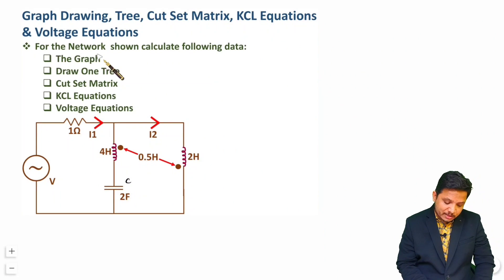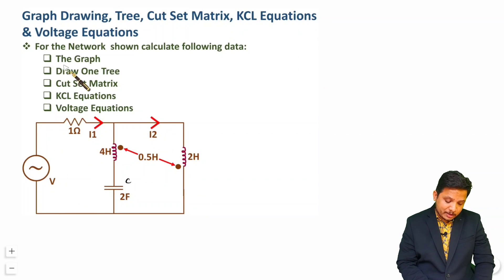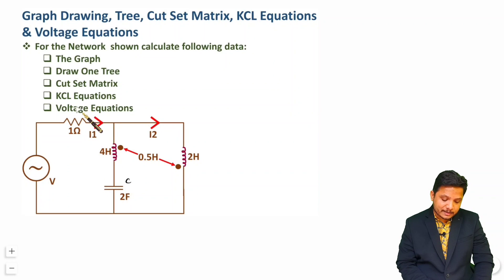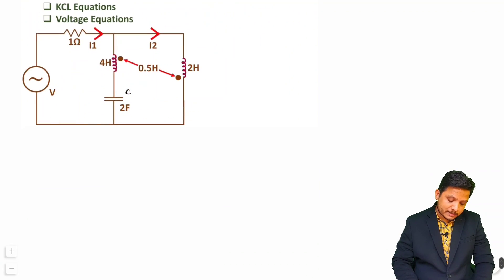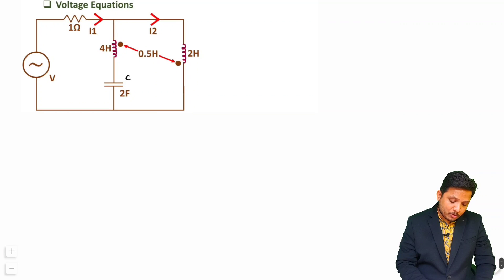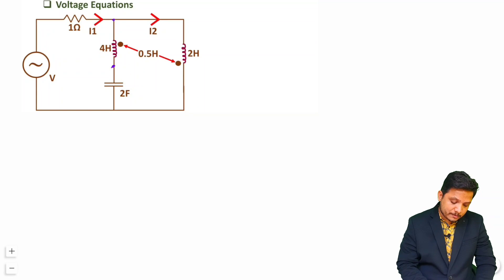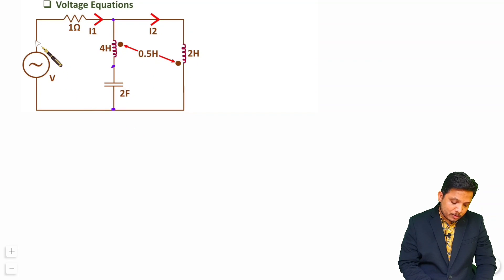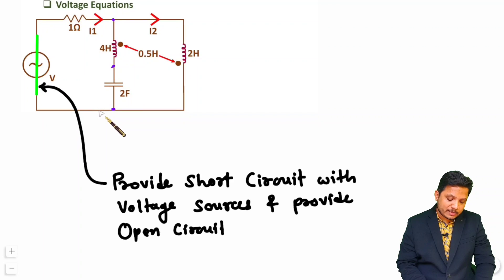Here in the question, a network is shown with given data. We are dealing with calculating the graph, plotting one tree, making the cut set matrix, and then forming KCL and voltage equations. To draw the graph, first identify the nodes. To identify nodes, you need to provide a short circuit with voltage source and an open circuit with current source.